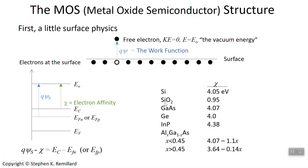The electron affinities we'll use most are the top two in the table. For silicon, the electron affinity is 4.05 electron volts, and for silicon dioxide it's 0.95 electron volts — really independent of doping. As you change the doping level of silicon, the electron affinity remains at 4.05 eV. Similar values apply to gallium arsenide, germanium, and indium phosphide — a roughly 4 eV consensus. Silicon and silicon dioxide are the pair of materials we'll focus on as we work toward the MOS capacitor.